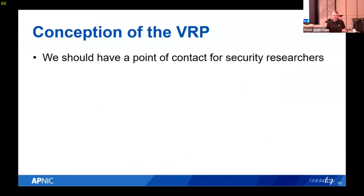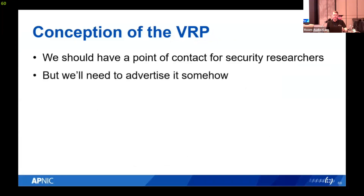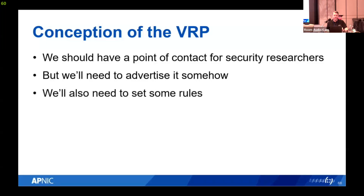We had some internal discussions, basically along the lines of: we should have a point of contact for security researchers to send us email about vulnerabilities they find. But if we create an email address or a way for them to communicate with us, we'd need to advertise it. And if we advertise the address, it could be abused — people could send emails for different purposes and overwhelm our security team. So we need to set some rules around what this address is to be used for.